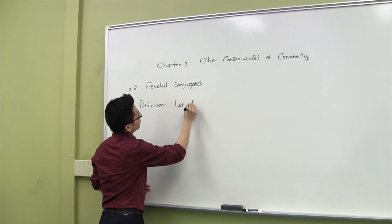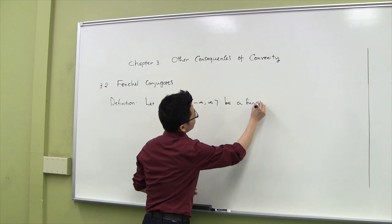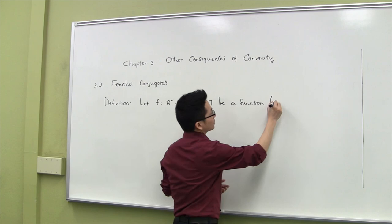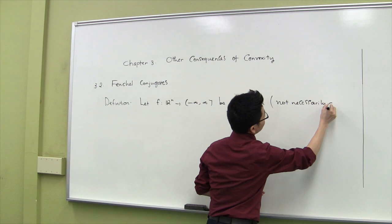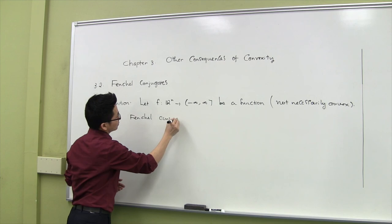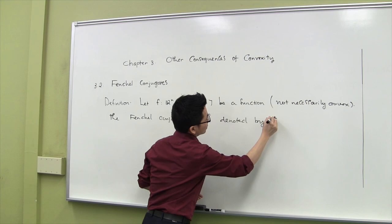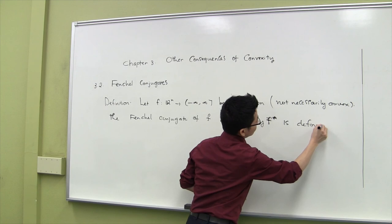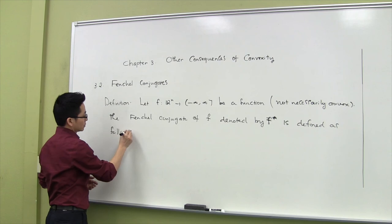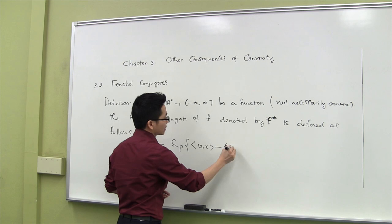Let f from R^n to the extended real line be a function. In this definition, f is not necessarily convex. The Fenchel conjugate of f, denoted by f*, is defined as follows: f*(v) is equal to the supremum of the inner product of v and x minus f(x), where x runs in R^n.